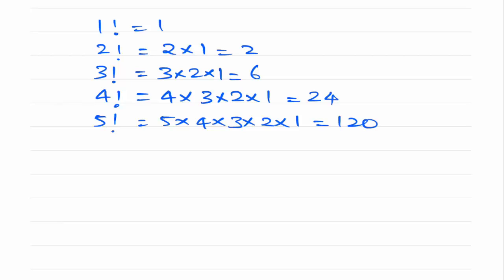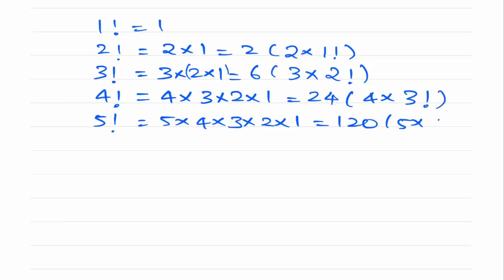If you look into this solution, 2 can be written as 2 into 1 factorial. 3 can be written as 3 into 2 factorial. Same way 4 into 3 factorial, 5 into 4 factorial. From this, the formula we can derive is n into (n minus 1) factorial. If you replace any number with n, this formula will work. Hope you understood the meaning of factorial of a number and its derived formula.